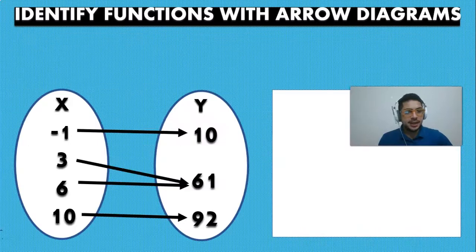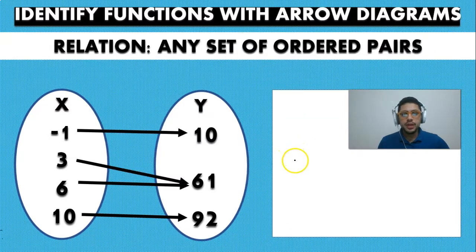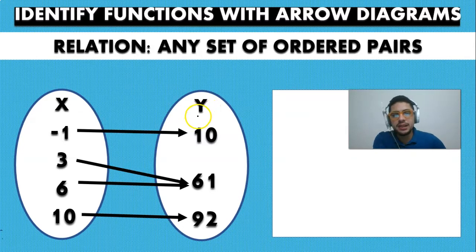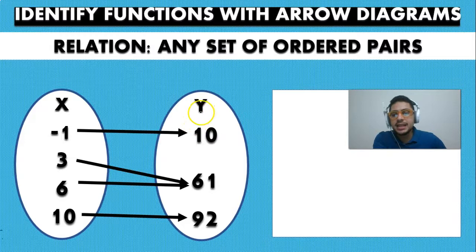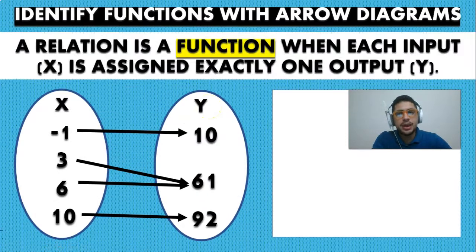Here we have our first example — a set of ordered pairs. We have: minus one gives a value of ten, three gives a value of sixty-one, six also gives a value of sixty-one, and ten gives a value of ninety-two. This is in fact a relation because it's a set of ordered pairs, but now we have to think: is this a function or not?